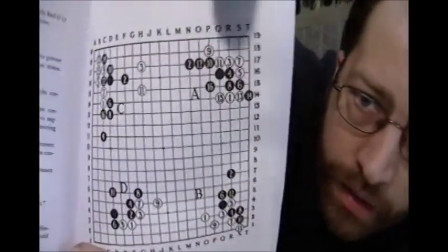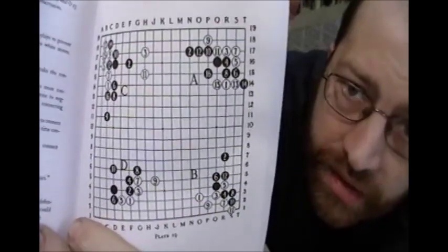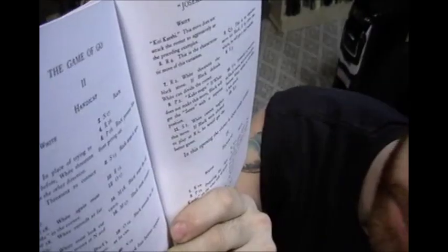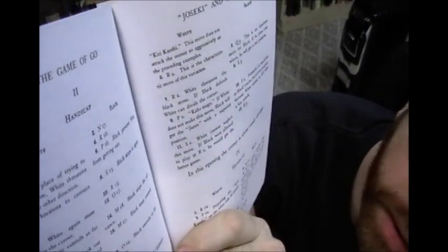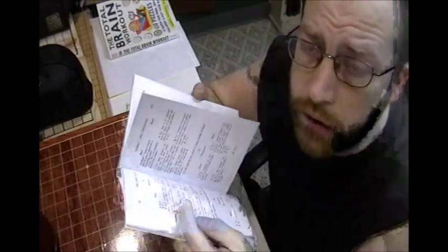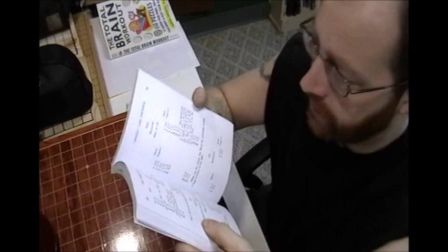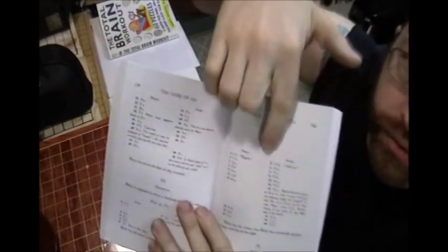So this would be under the illustrative game section. But when you get into the Joseki section, this would be an example. You have A, B, C, and D, right? So these would be Josekis. And so what they would do, is they would show you the number. It would say like A, white one, black two. And it says white one is at R14. Black two is at N17. So you could see how this could be very, very difficult to follow, unless you have a board with all the letters and numbers that he has. Which I don't think anybody does. So it is difficult. However, if you are able to follow through...